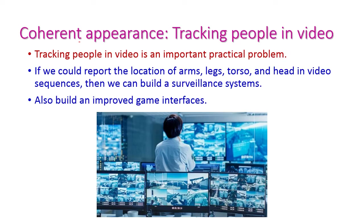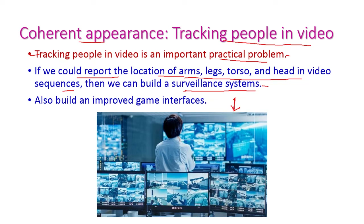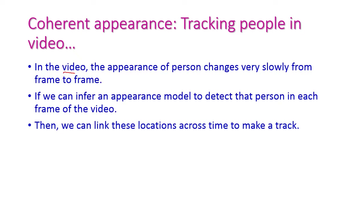The next topic is coherent appearance — tracking people in video. Tracking people in video is a very important practical problem. If we can report the location of the body parts of a particular person, we can build a very good surveillance system. Monitoring what a particular person is doing is called a surveillance system, and this is also helpful to improve game interfaces.